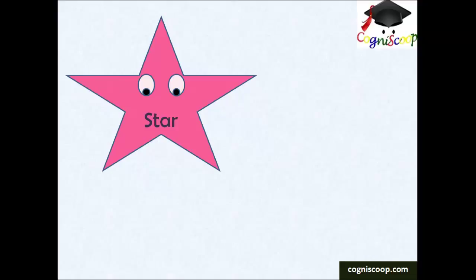Star has five points coming out of a circle. The twinkling stars up in the sky are an example.